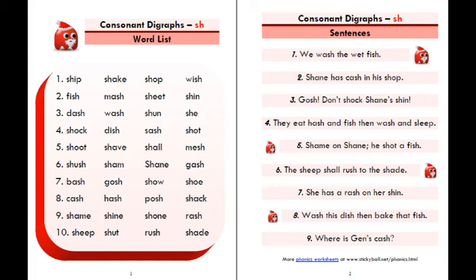Four: they eat hash and fish, then wash and sleep. Five: shame on Shane, he shot a fish. Six: the sheep shall rush to the shade.